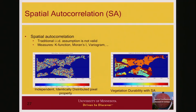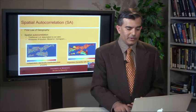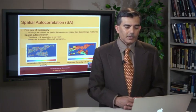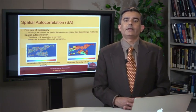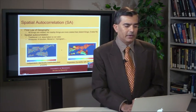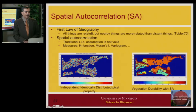We can quantify autocorrelation. The K function is one way to do this for point data. Many people have observed this phenomenon — Tobler made this statement back in the late 1960s: 'All things are related, but nearby things are more related than distant things.'